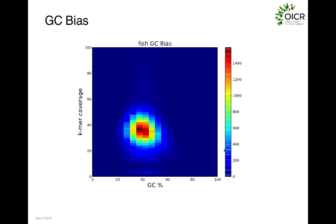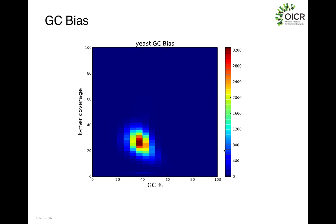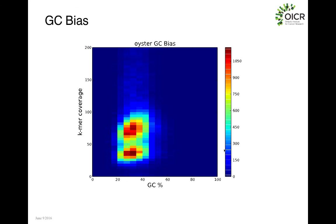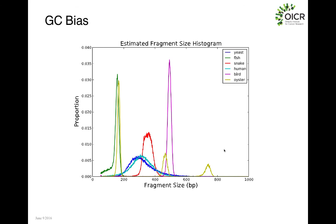One of the last things to check is GC bias — you don't want your k-mer coverage to be based on GC percentage. The program plots a heat map, and you don't want any trends present. For our fish, which doesn't have any GC bias, we see a singular point in the middle without any trends. For the yeast genome there's a slight linear trend where increasing GC concentration causes a slight decrease in coverage. For the oyster genome, because of that high SNP rate and heterozygosity, we actually get two GC hotspots and see a slight bias for GC in terms of k-mer coverage. The program will also output the expected fragment size distribution because you're using paired-end reads.